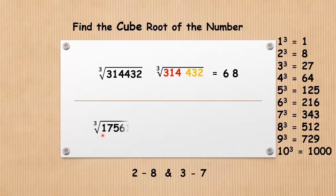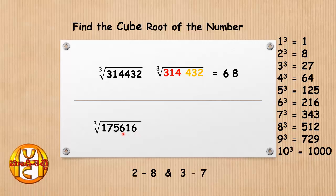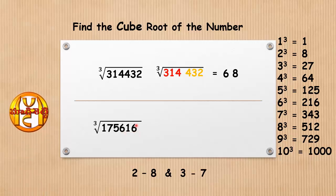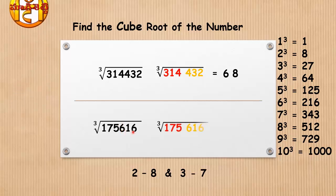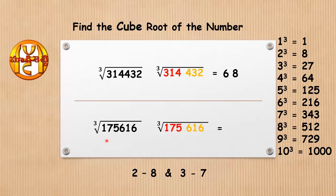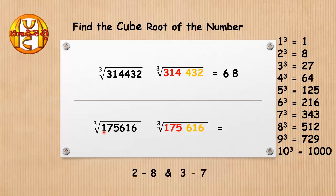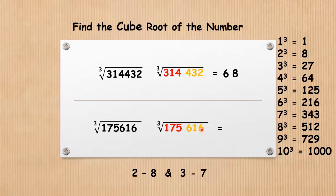Now take another example to find the cube root of 175616. Here also we have six digits. Forming two groups: 616 as the first group and 175 as the second group.